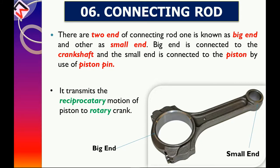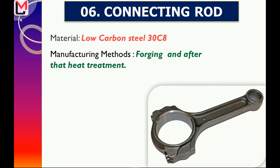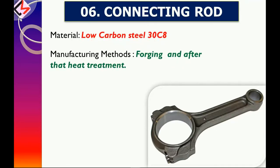The connecting rod transmits the reciprocating motion of the piston to the rotary crank. It is made up of low-carbon steel, 30C8 material. The manufacturing method used is forging followed by heat treatment.